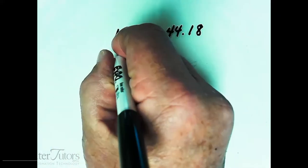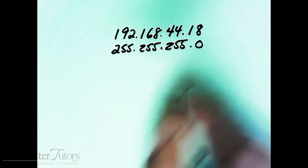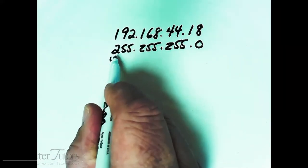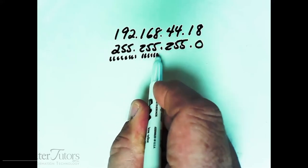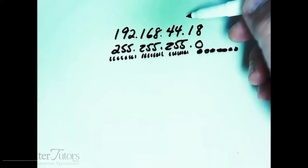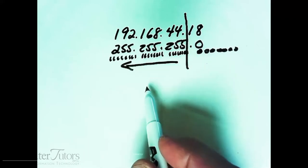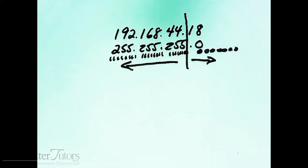I just wrote an IP address: 192.168.44.18. When I look at this number, I really can't tell what portion is the network address or what portion is the host address without the subnet mask. So I'm going to write a subnet mask of 255.255.255.0, which is 24 on-bits and 8 off-bits. We draw a line between the 44 and the 18. So the network address is 192.168.44, and the computer or host address is 18.